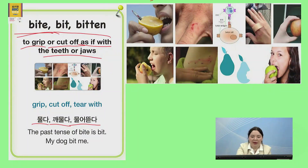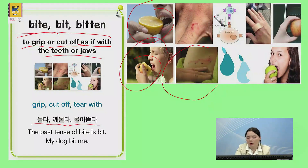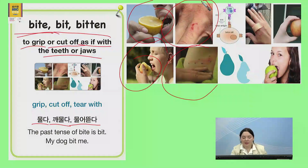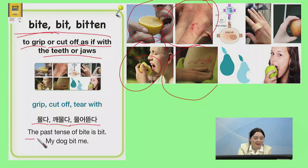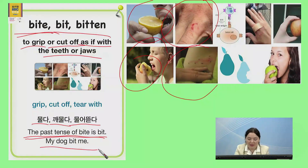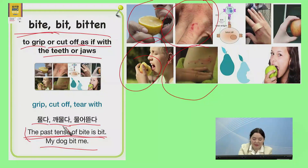So you might bite a lemon, bite an apple. You might get bit by a bug or by a small animal. Being bitten is 어떤 걸 당신을 무는 거예요. The past tense of bite is bit. My dog bit me. Bite의 과거 시제는 bit이다.